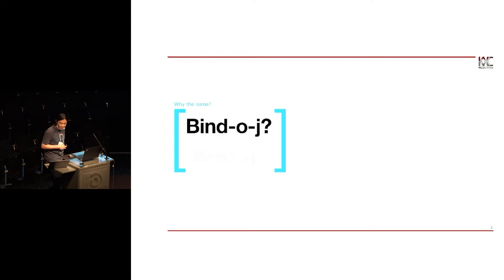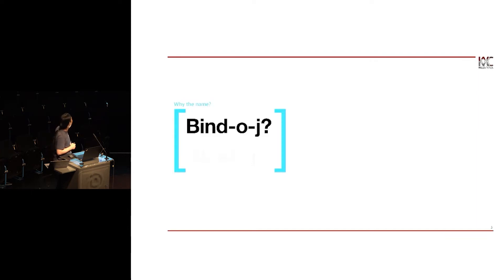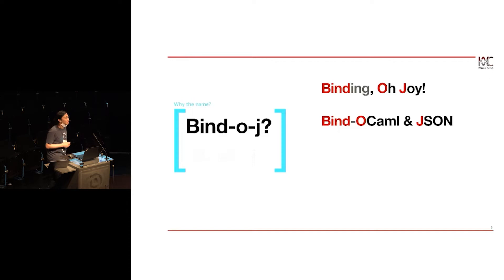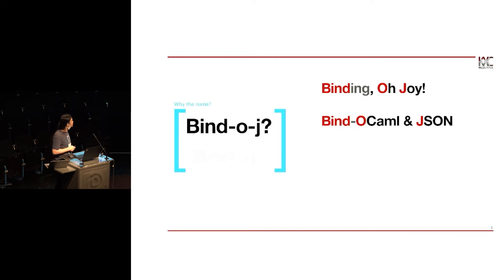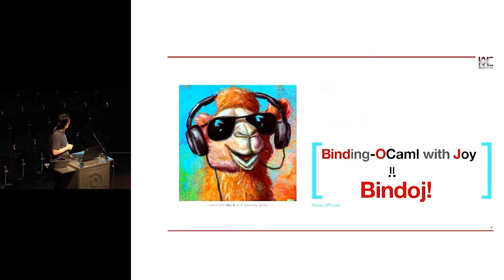Firstly, I would like to discuss the name. Why is it called BindLJ? Why do we pronounce it BindLJ? Actually, the name doesn't matter — we just wanted to have a name, but it does have an origin. This library originally had something to do with binding generation. Originally, it's binding OCaml and JSON, but in the progress of developing this library, the scope just goes bigger and bigger. We thought 'binding OCaml' would be something good, so let's make it official.